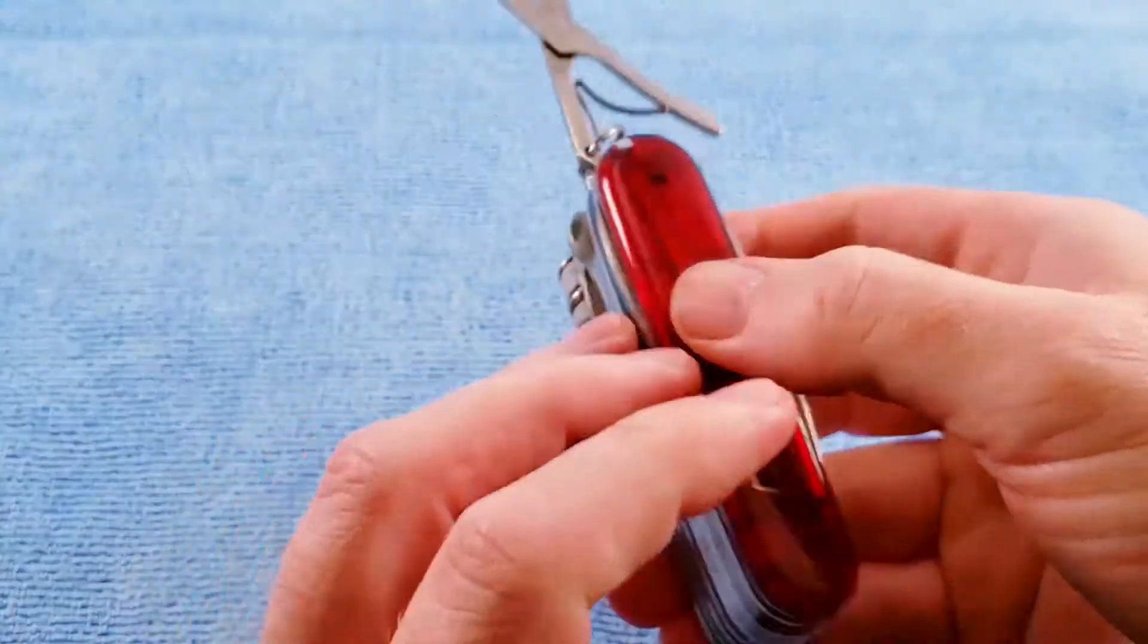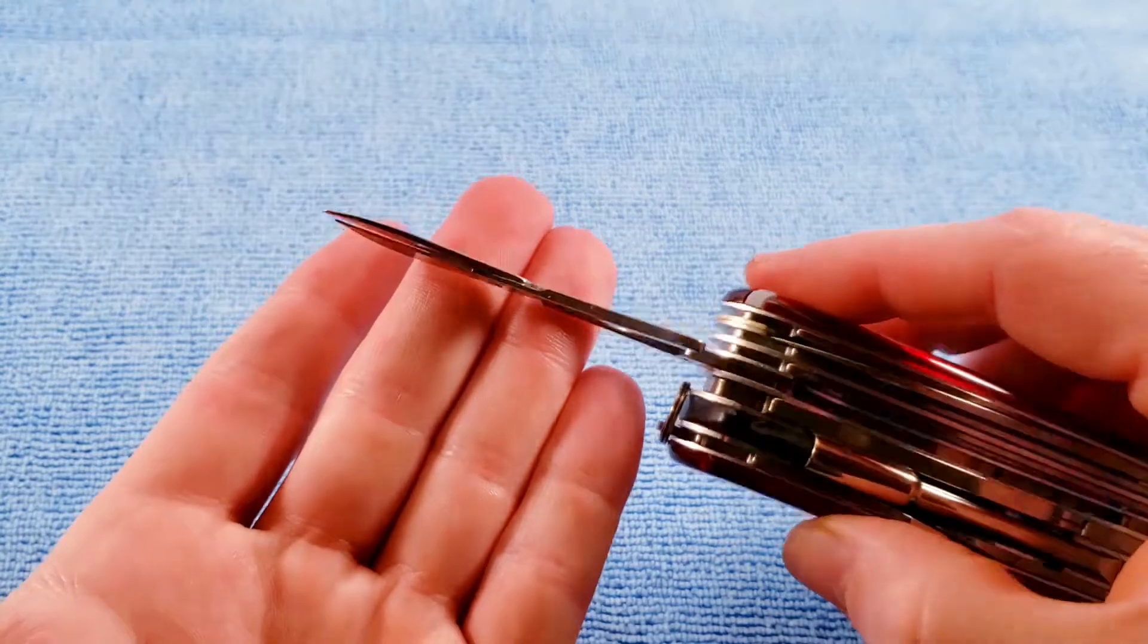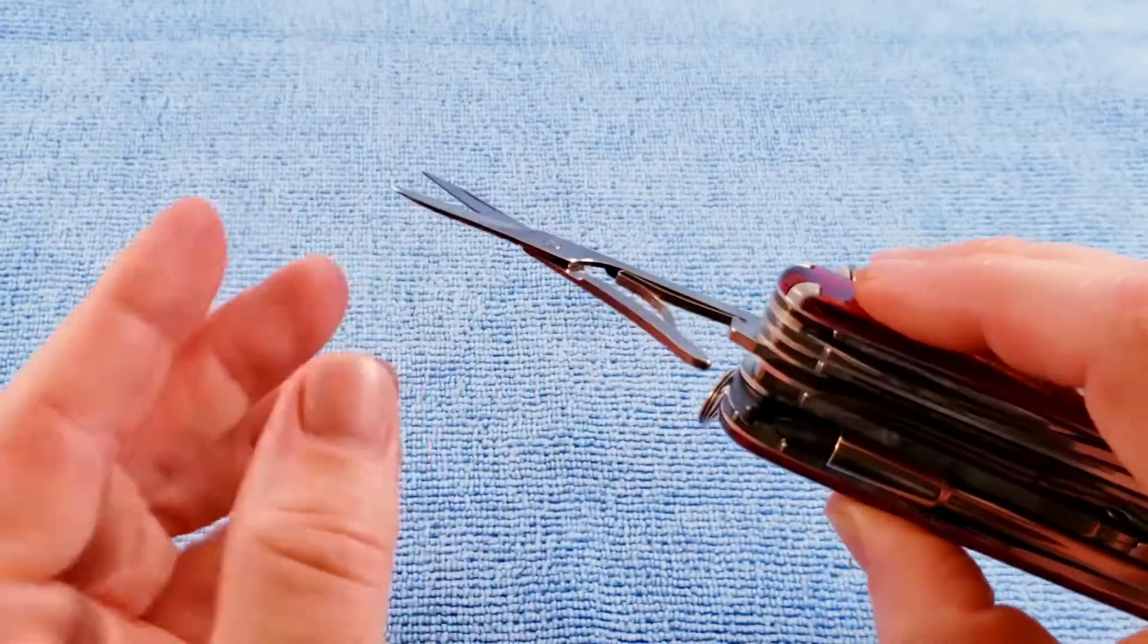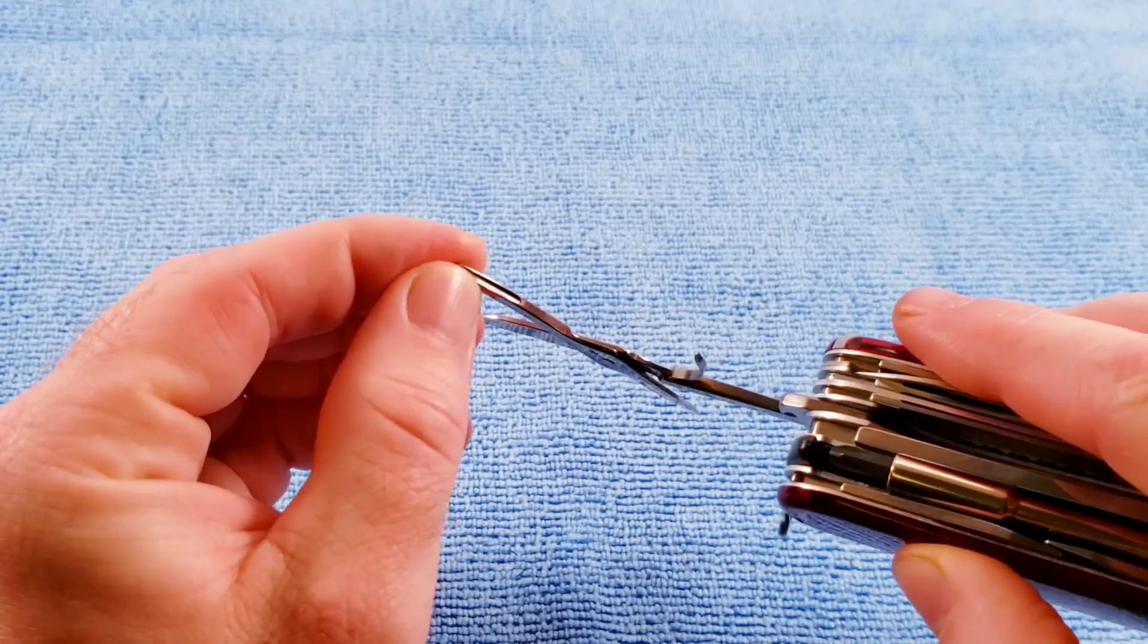We get the scissors which have the rivet and the 1990 edition of the spring guiding groove.